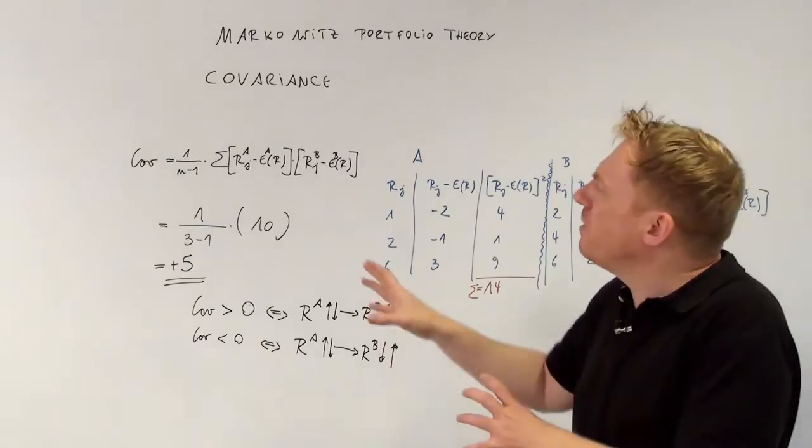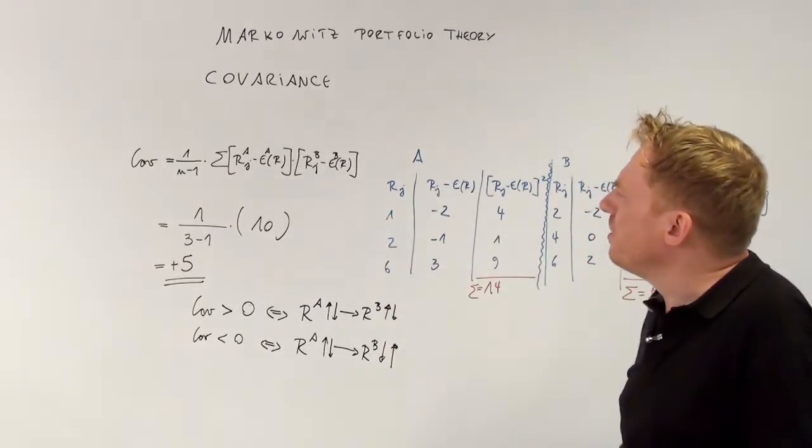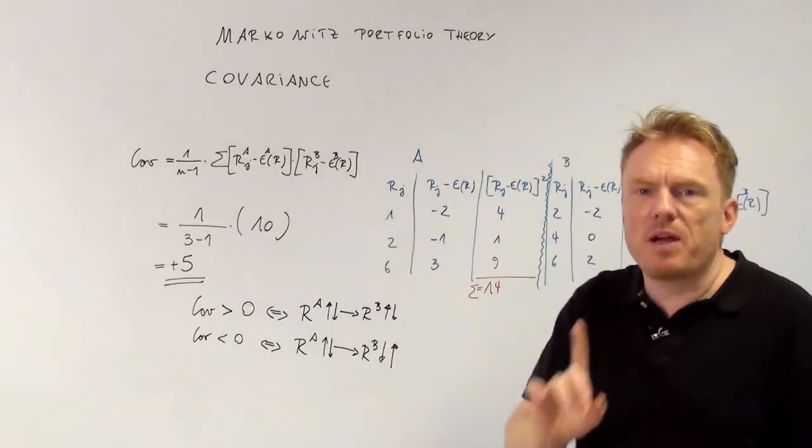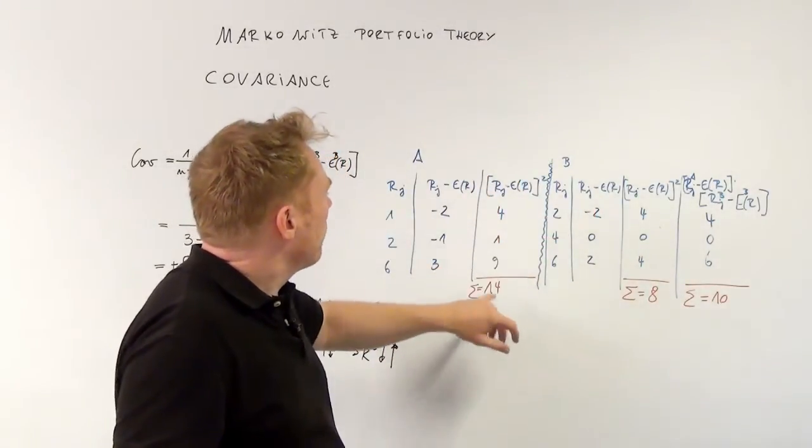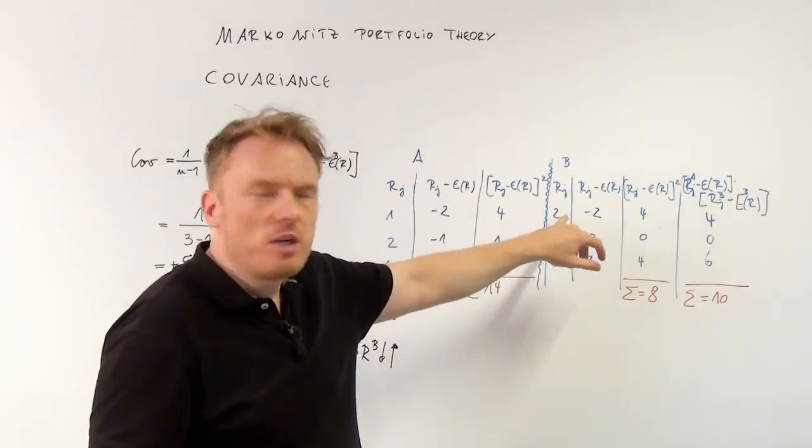Sum up those numbers, but here we just want to calculate the covariance and not the variance. So let us just go on and look at share B.